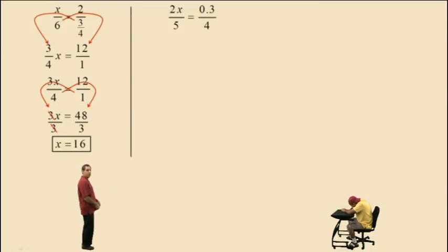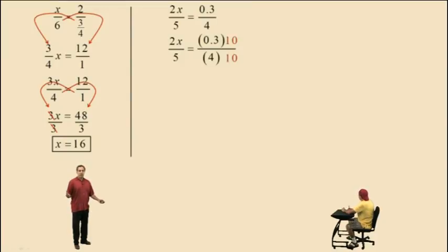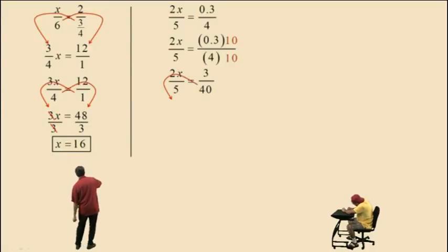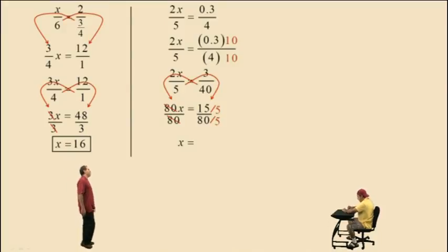Let's do another one. Now here we throw in a decimal: 2x over 5 equals 0.3 over 4, or 3 tenths over 4. On the right-hand side, we are going to clear that decimal by multiplying numerator and denominator by 10. So the left-hand side stays as 2x over 5. The right-hand side, 3 tenths over 4 multiplied by 10 over 10 gives us 3 over 40 — the decimal is gone. Now we cross multiply: 40 times 2x is 80x, and 5 times 3 is 15. To solve for x, we divide both sides by 80 and get 15 over 80. Charlie, can 15 over 80 be reduced? Yes — the common factor is 5. So dividing out the 5, we get a final answer of 3 sixteenths.